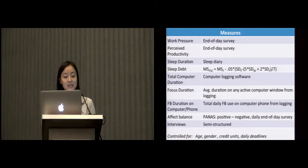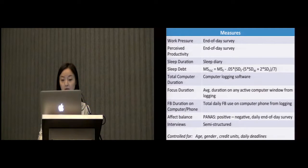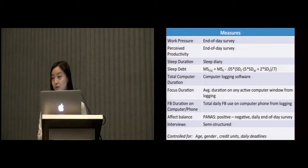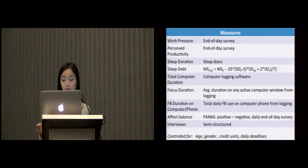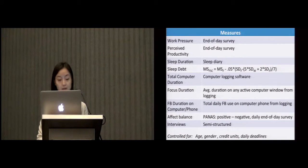So here are the list of measures that we used in our data analysis. Using a five-item Likert scale, we asked participants to rate how much they feel that they were under work and study pressure that day, and how productive they feel that day. This is collected through the end-of-the-day survey. From the self-reported sleep time the night before and the wake-up time, we computed a sleep duration for the night before. Also from the sleep diary, we computed sleep debt using the formula by Ronnenberg and colleagues. So greater value represents a greater amount of sleep debt. And I encourage you to refer to the paper for more details about the calculation of the sleep debt.